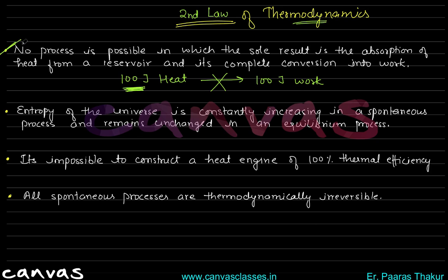Second statement: the entropy of the universe is constantly increasing in a spontaneous process and remains unchanged in an equilibrium process. So the universe's entropy increases in a spontaneous process. In a reversible case, delta S universe equals zero, and in irreversible cases, delta S universe is positive. This is the second law statement.